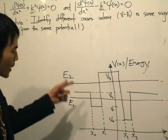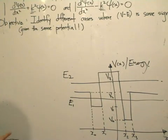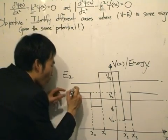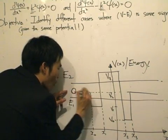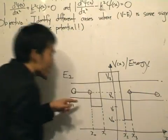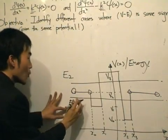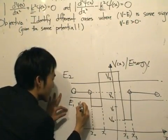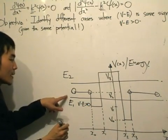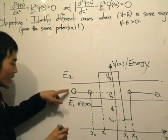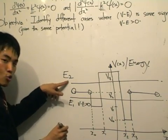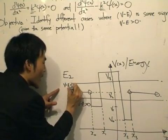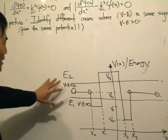One way to see why they are separate cases is: as we move energy E₁ up, notice that V minus E changes sign at certain points. In one region, V minus E is positive — the potential is higher than the energy. But as we move up to E₂, the energy becomes higher than the potential, so the sign changes. I couldn't think of a more mathematically rigorous way to put it, but that is the basic idea.